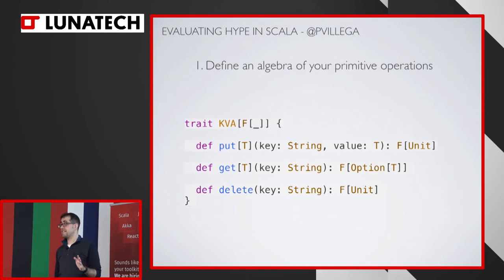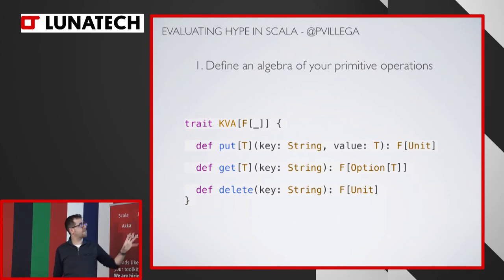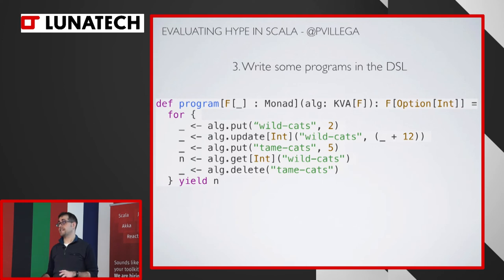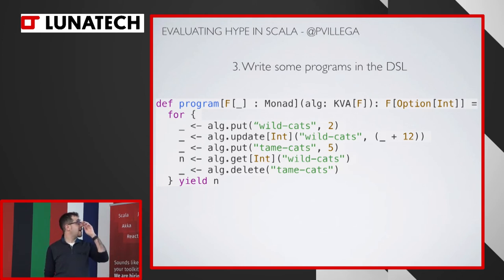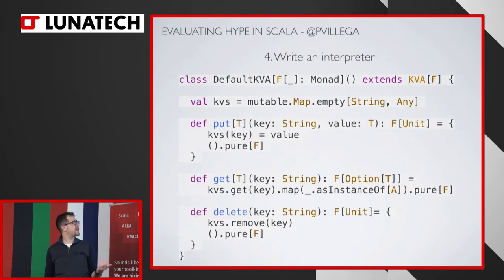Out of the door, there's already a big difference — there is no step two. We said there were five steps for Free. For Tagless, you don't need to lift your algebra, because your algebra is already functions, it's already your DSL. So suddenly you have four steps. You start by defining a trait — and that F type parameter has nothing to do with Coyoneda — it's basically saying all this will be in the context of a certain effect. Then you define your functions: put, get, delete.